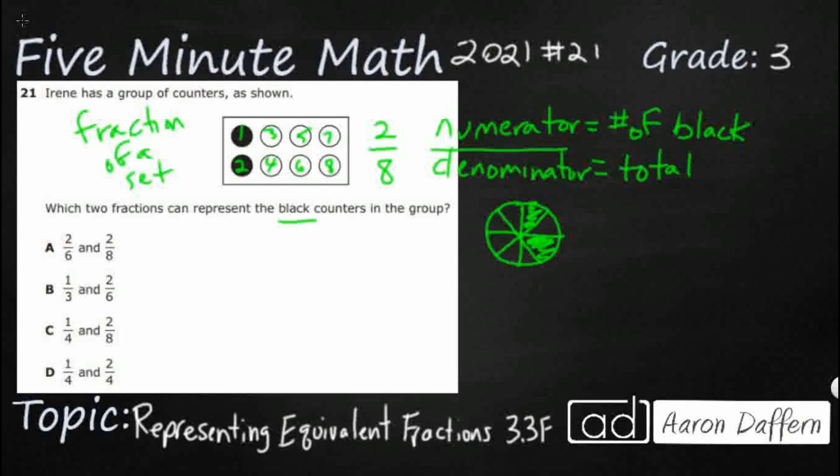So we've got this two sixths and two eighths. Well this works right here. I can tell you that this two sixths doesn't work. I know what they did here. Common mistake is to make this two, that makes sense because there's two black ones.